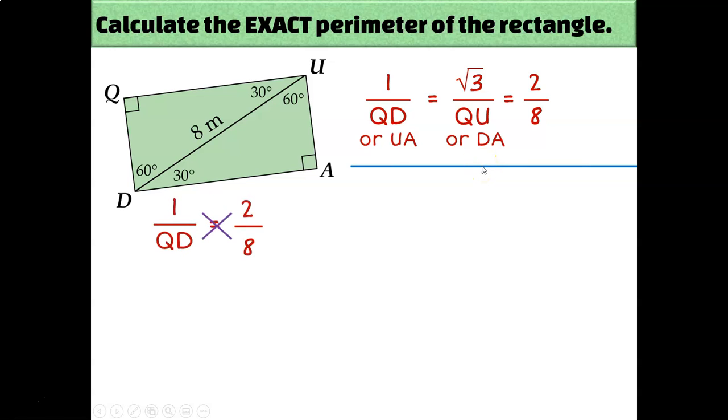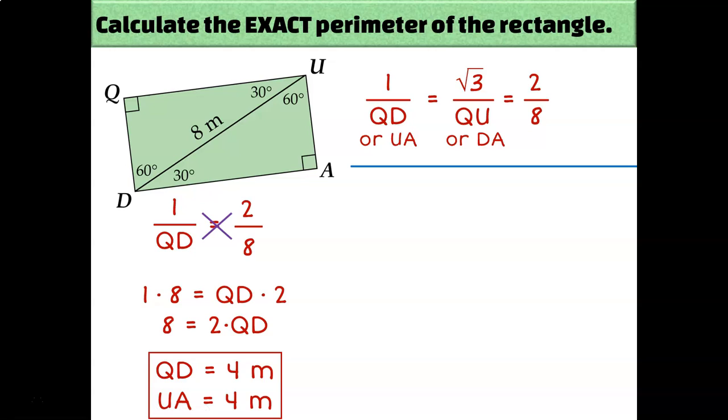So to find the length of QD, I can take 1 over QD, that's the ratio that has QD, and set it equal to 2 over 8. That's the ratio that is complete, that I know both the top and the bottom number. Cross multiply and solve, and we get a pretty little answer of QD equals 4, which means UA equals 4 as well.